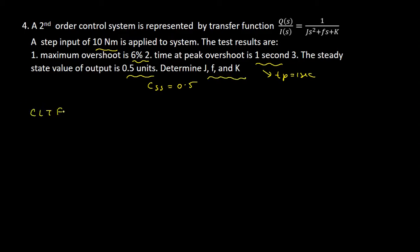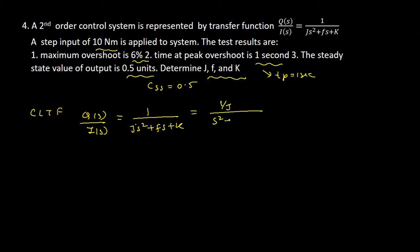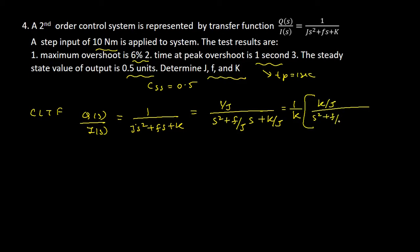The given closed loop transfer function of the second order control system is Q(s)/I(s) = 1/(Js² + fs + K). We take J common from the denominator to get (1/J) divided by (s² + (f/J)s + K/J). This equation is not in standard form, so we multiply and divide by K to get (1/K) · (K/J) divided by (s² + (f/J)s + K/J).